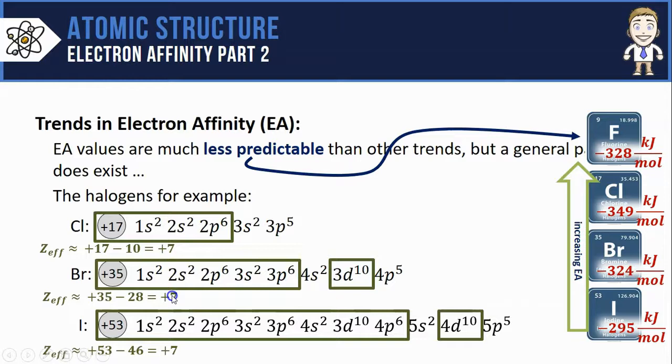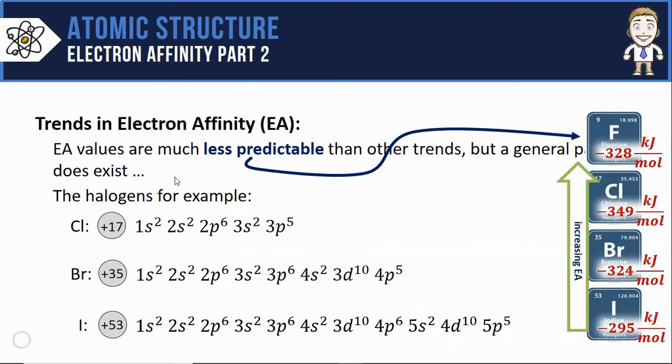So just like within any column on the periodic table the effective nuclear charge remains pretty much constant. This means that the differences we see in electron affinity between the atoms has to do with the outermost valence shells that the electrons get added into.